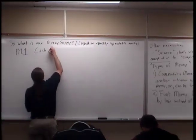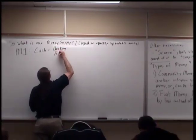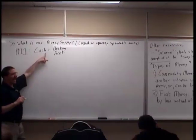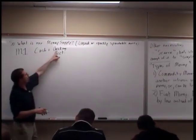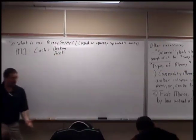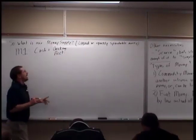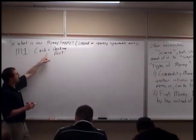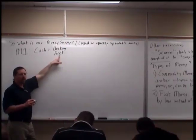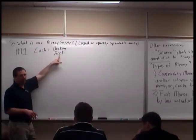The first definition of M1: anything that is liquid or quickly spendable. They said add up all the cash in the system - all the dollar bills and coins - and add up all the money in everyone's checking accounts. The government keeps track of everything in everyone's checking account. And technically there's one more thing in M1: traveler's checks.